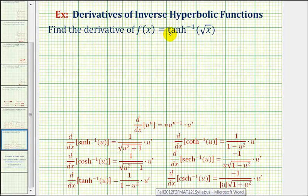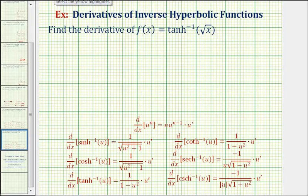We want to find the derivative of f(x) equals inverse hyperbolic tangent of square root x. The first thing we need to recognize is that the given function is a composite function, so we'll have to apply the chain rule in order to find our derivative. The outer function is the inverse hyperbolic tangent function, and the inner function is the square root function.